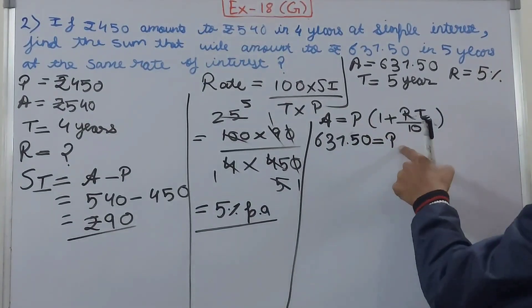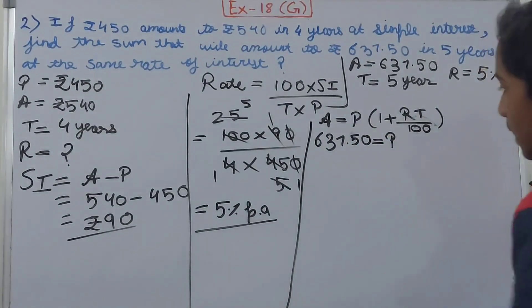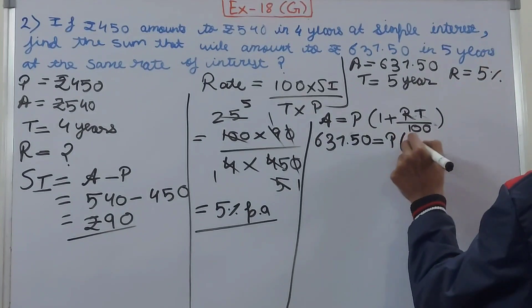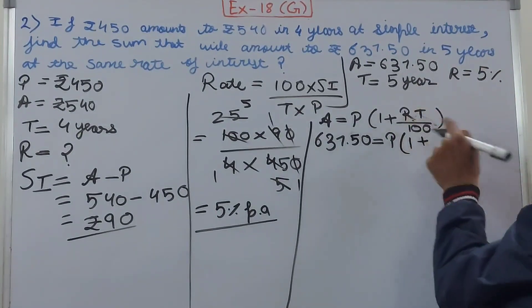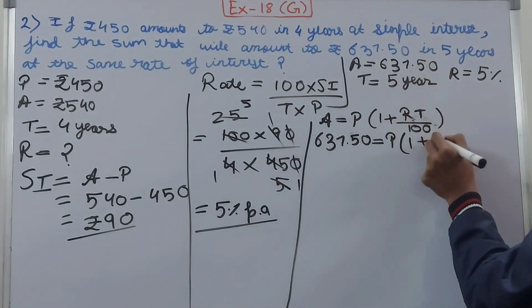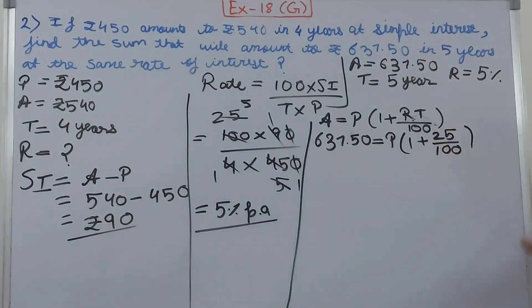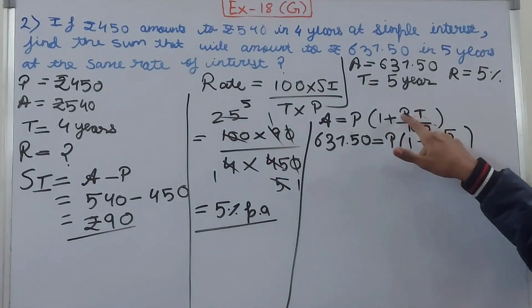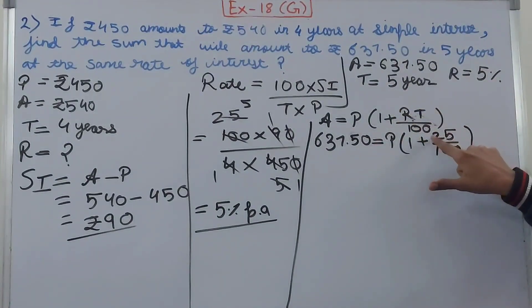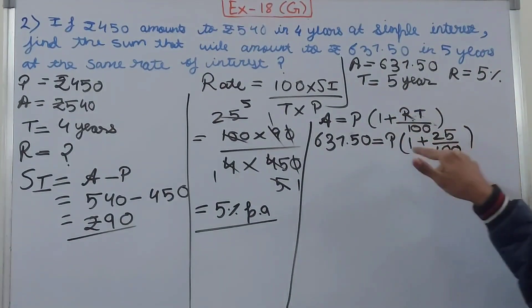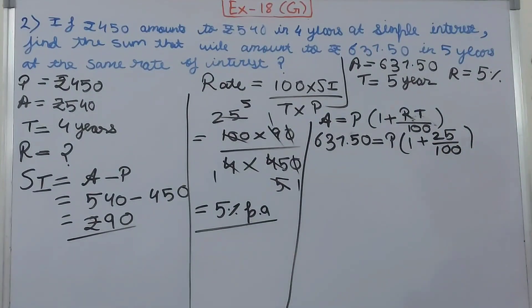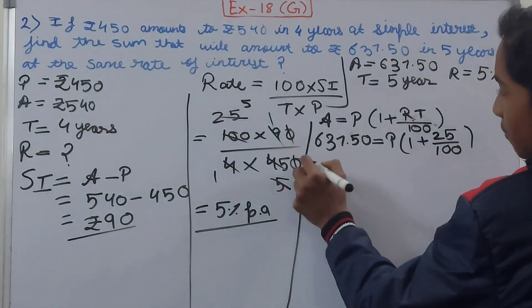So ₹637.50 equals to P, we do not know, so keep it as a variable. And then in brackets here we'll have 1 + RT. Rate into time: 5 × 5 = 25, so we have 25 in the numerator. This again will be solved.